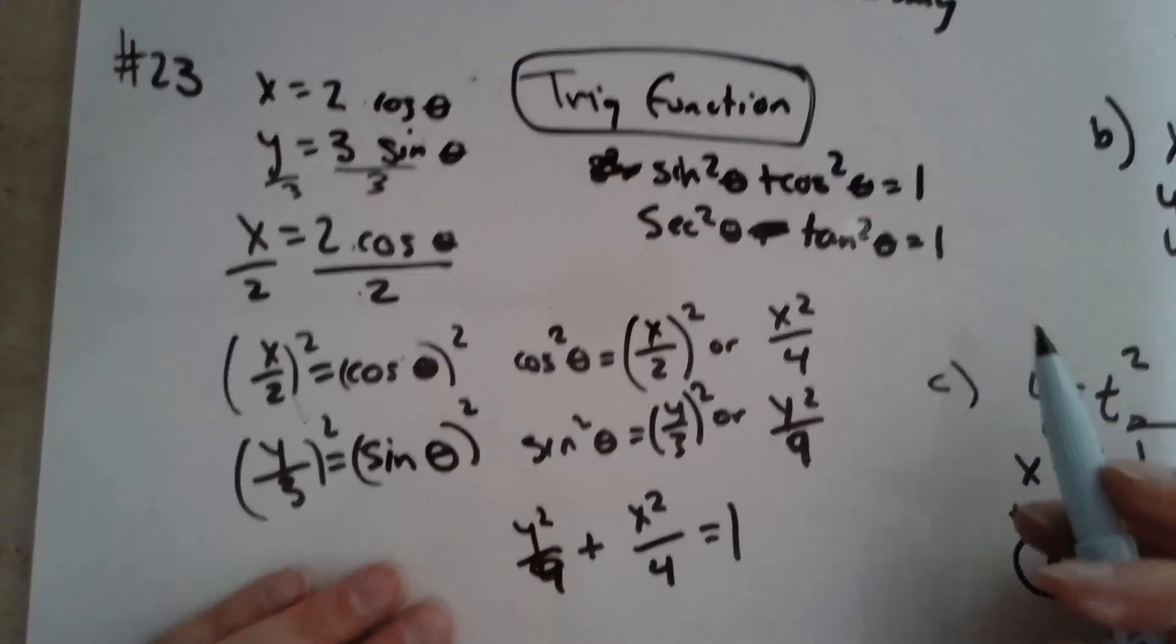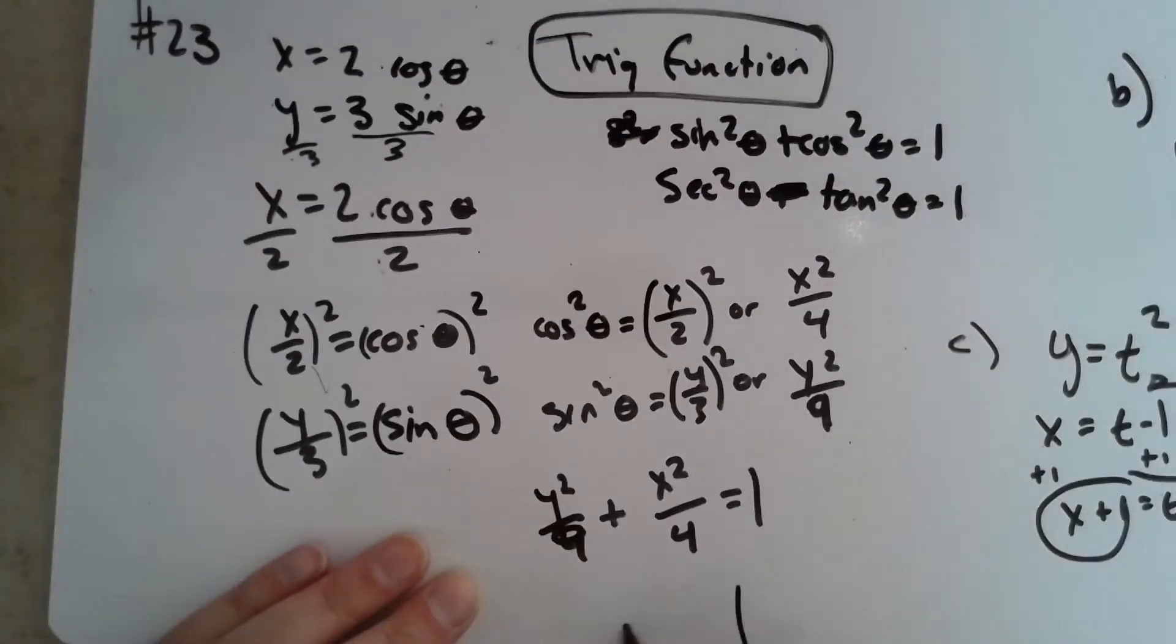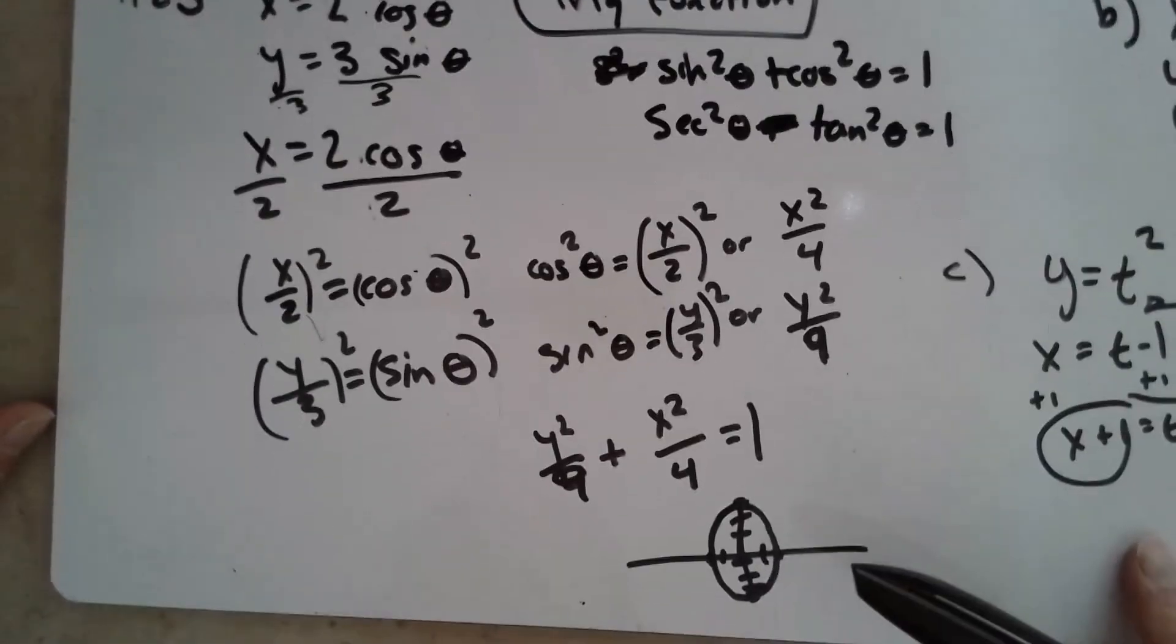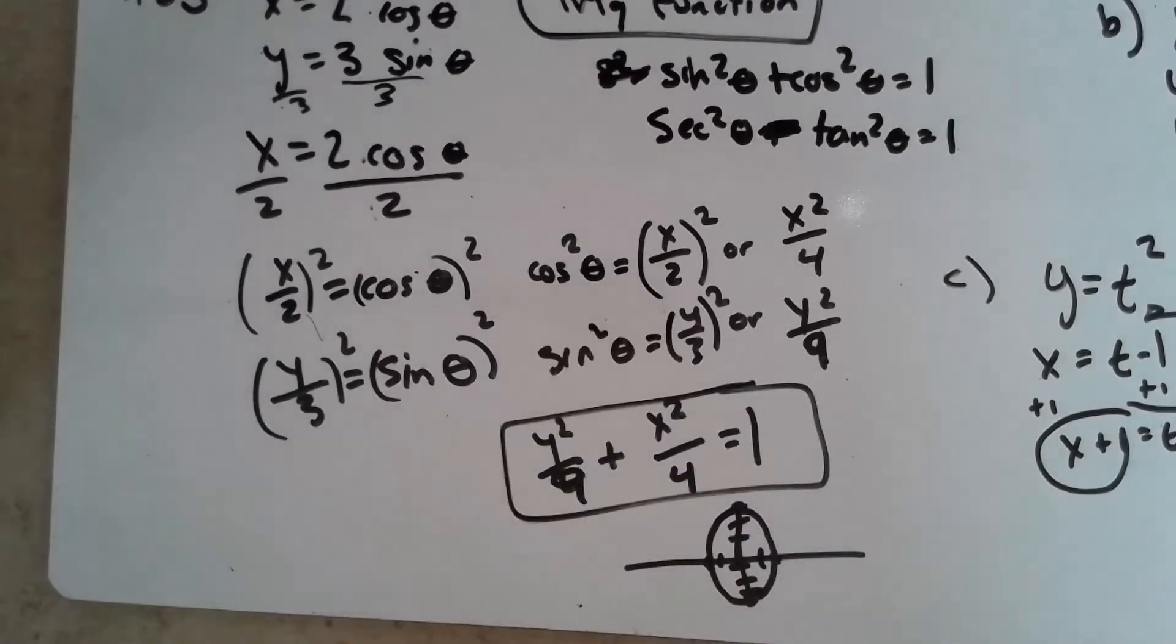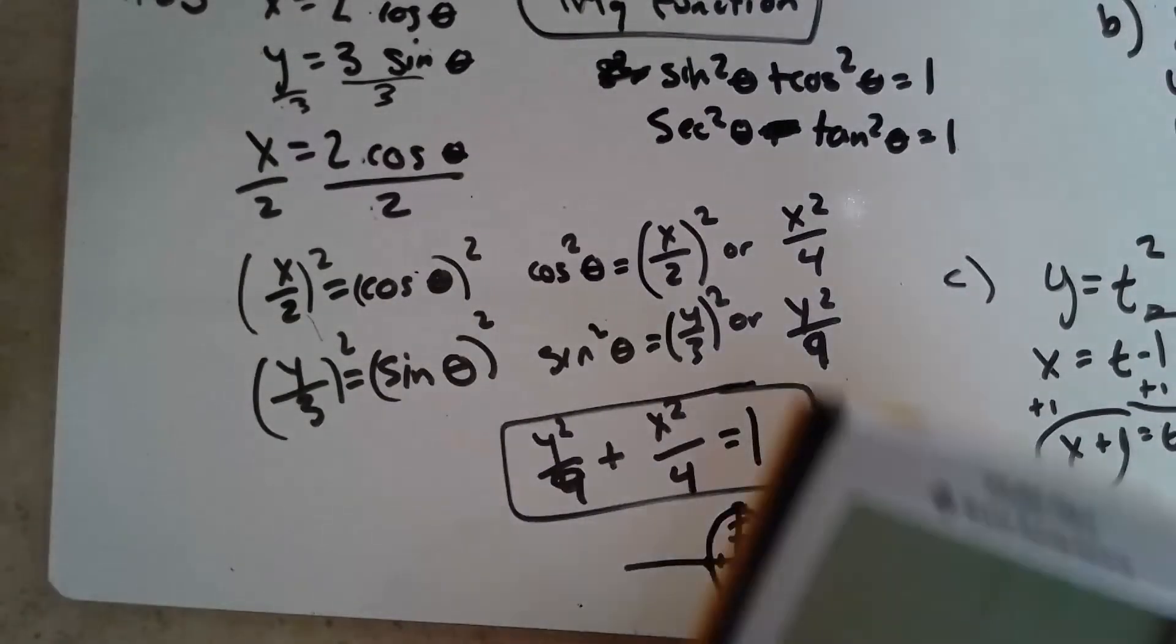And this should look familiar. What shape is this? This is an ellipse. So we start our centers at 0, 0, and our y direction would go 1, 2, 3, 1, 2, 3, and our x would go 1, 2, 1, 2, and we'd have this ellipse. Okay, so that would be its form in rectangular.